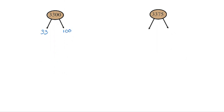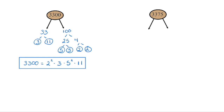Let's try some larger numbers — 3,300. In the beginning, look for any number that you know will divide evenly. 2 will divide evenly because it's even, but I can also see that 100 will divide evenly, so I'm going to start there. So we've got 33 times 100. We can break 33 into 3 times 11 — both prime. And 100 breaks into 25 times 4. 25 breaks into 5 times 5, and 4 breaks into 2 times 2 — both prime. The unique prime factorization of 3,300 is 2 times 2 times 3 times 5 times 5 times 11. We can also write that in exponential notation: 2 squared times 3 times 5 squared times 11.